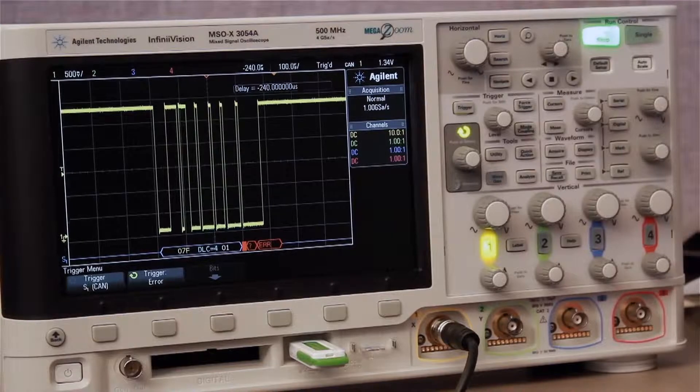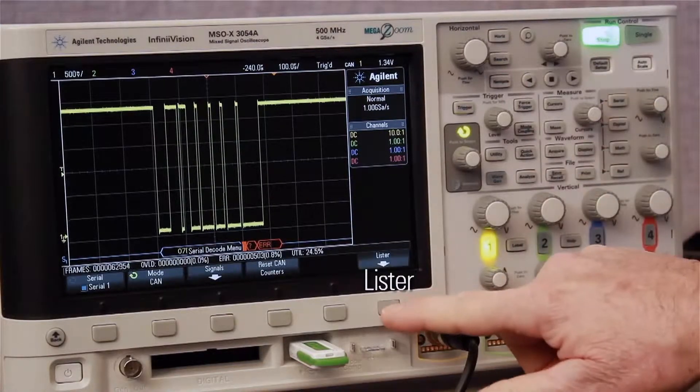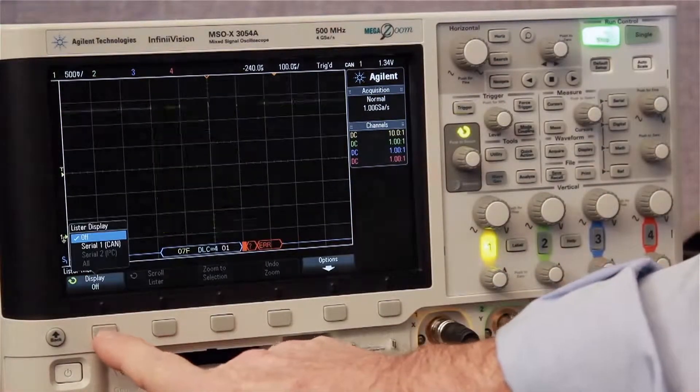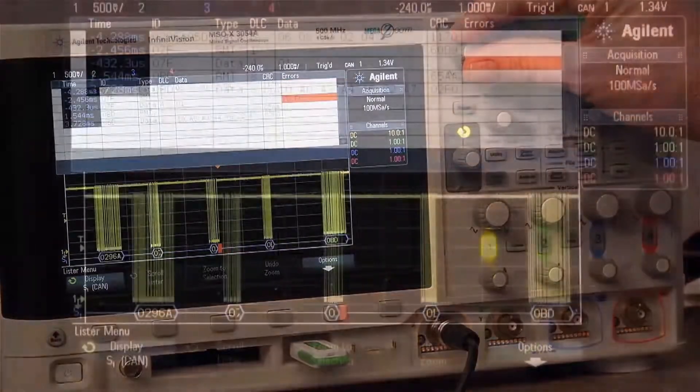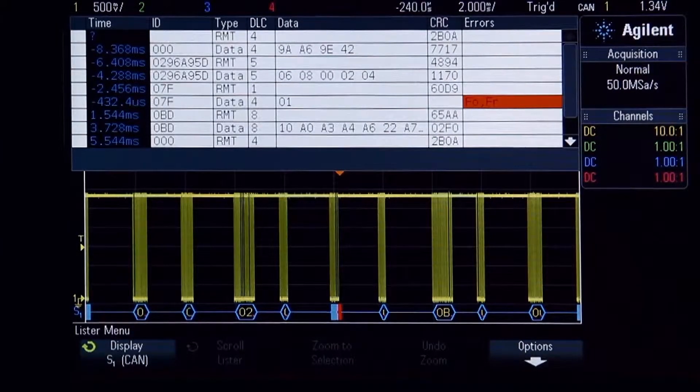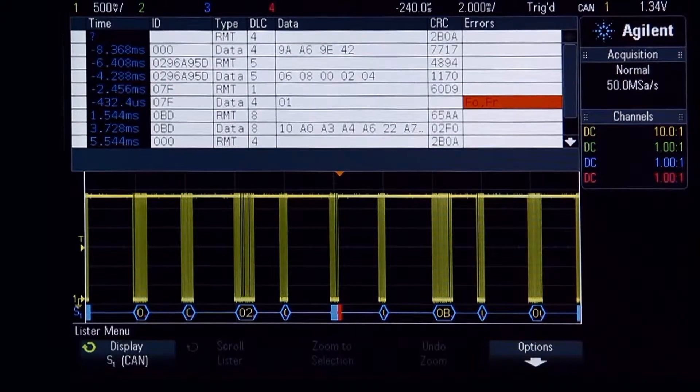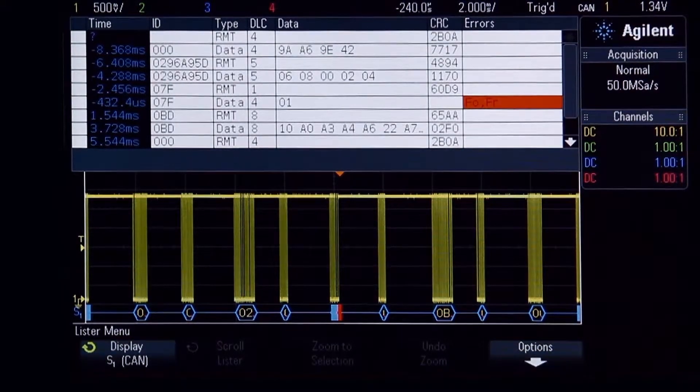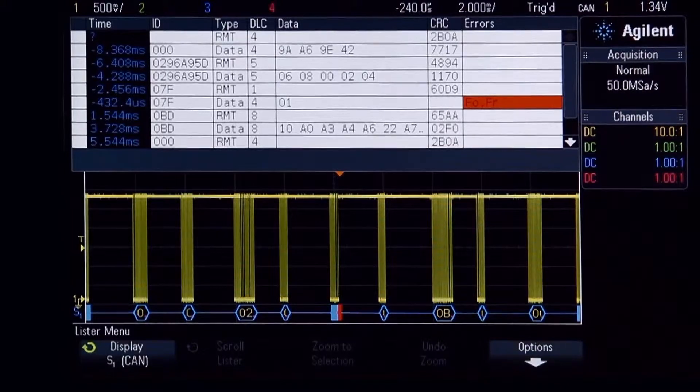In addition to viewing the time-correlated decode trace below the waveform, we can also view this same information in a tabular format with clearly labeled columns of data that directly correlate to the fields of decoded data shown in the time-correlated decode trace below the waveform.